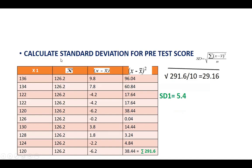Next, we need to find the standard error, for which we must calculate SD₁ and SD₂. The standard deviation formula is: √(Σ(x - x̄)²/n). For the pre-test: Σ(x - x̄)² = 291.6, divided by n = 10, giving 29.16. The square root of 29.16 gives SD₁ = 5.4.